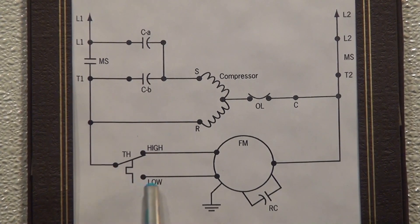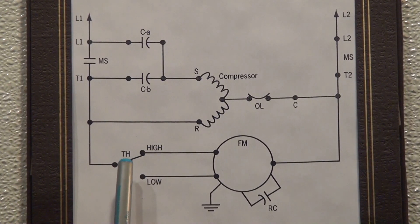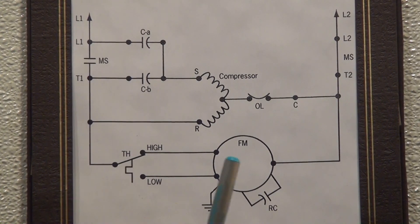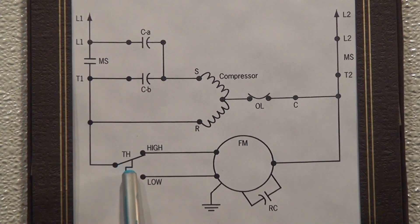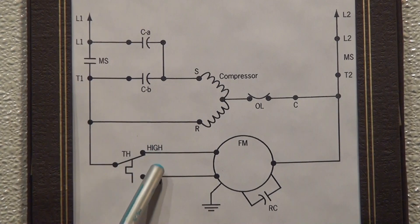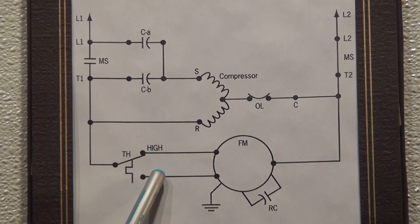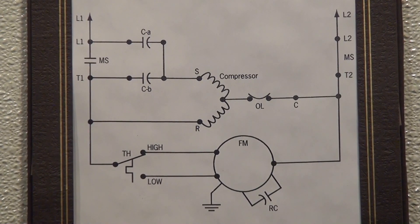Now the other thing we want to talk about here is this device right here. This device is an outdoor fan motor thermostat. Since it's a heat pump, we have a situation where this manufacturer has decided that in a low ambient situation and a higher ambient situation, we'll be able to go back and forth between a high and low speed with the outdoor fan motor in order to maintain proper high side refrigerant pressure.